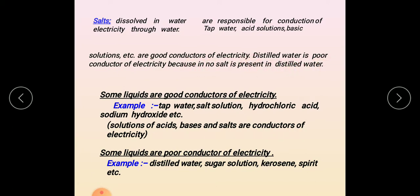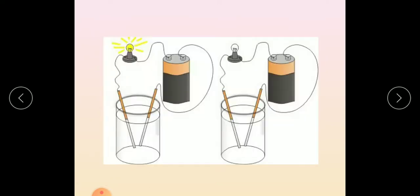Distilled water is a poor conductor because it has no salt. Some liquids are good conductors: tap water, salt solution, hydrochloric acid, and sodium hydroxide (a base). Some liquids are poor conductors: distilled water, sugar solution, kerosene, and spirit. That is what we have learned today.